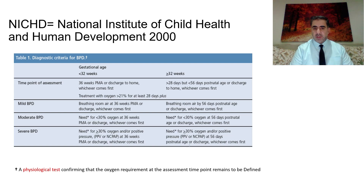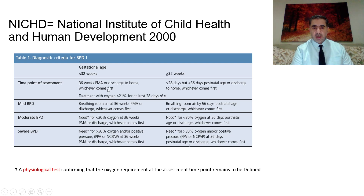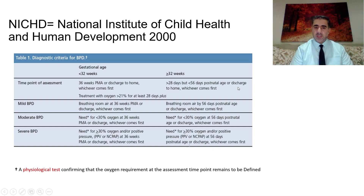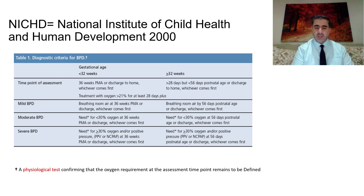This new definition classified babies into two categories: less than 32 weeks, or greater than or equal to 32 weeks. The difference between groups is in the time of assessment only, while the criteria are the same. For the first group, assessment is at 36 weeks post-menstrual age; for the second group it is at 28 to 56 days postnatal age, or at time of discharge to home. For either group, the requirement is treatment with oxygen more than 21 percent for at least 28 days.